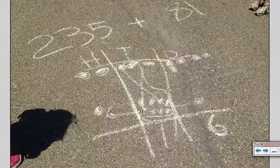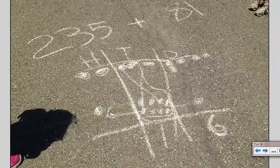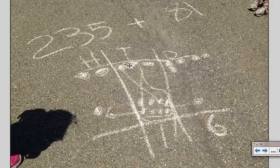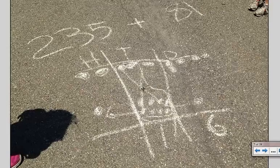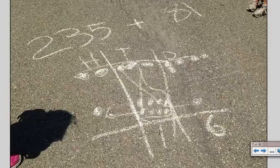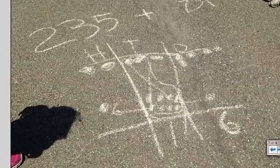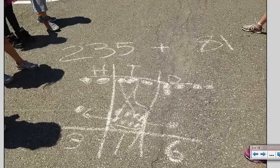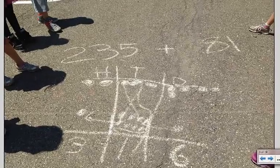Now this is the part where it gets tricky, because when I count the number of tens, I see that I have eleven tens. Well, there's no such thing as eleven tens, so what I need to do is to bundle these ten tens and move them over as one, one hundred. That leaves one ten in the tens place, and three hundreds in the hundreds place. So 235 plus 81 is 316.